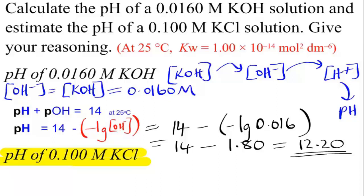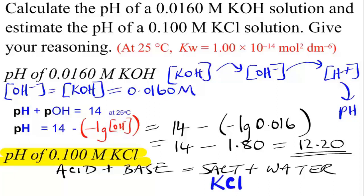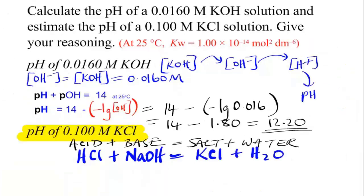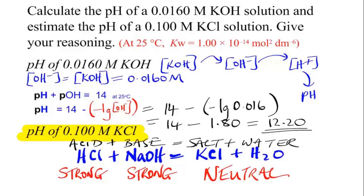Part 2: what is the pH of 0.1 mol dm⁻³ potassium chloride? KCl is a salt made from HCl (strong acid) and KOH (strong base). A strong acid with a strong alkali produces a neutral salt solution, because K⁺ and Cl⁻ have very little tendency to react with water. So neither H⁺ nor OH⁻ are produced. The answer is neutral: pH 7.